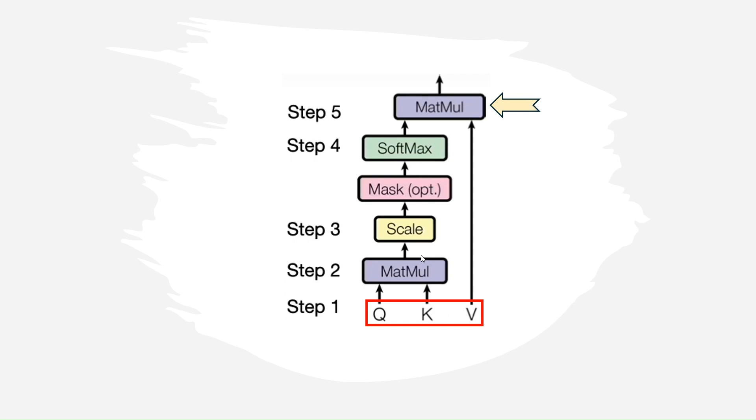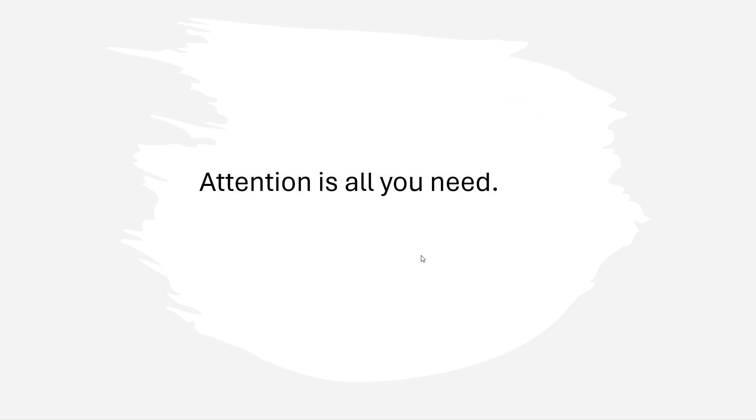Now, let's see how we can compute the query, key, and value matrices. Consider a sample text like this one. The first step is to split the text into smaller chunks or tokens. For example, we can consider each word as a token. We then pass each token to an embedding layer to convert it to a vector of numbers. Each embedding vector can be considered as a numerical representation of the related token. In the original transformer model, the length of the embedding vectors is 512.